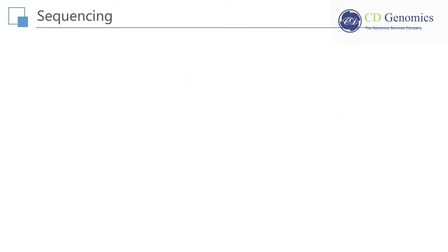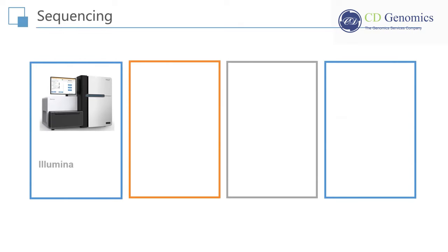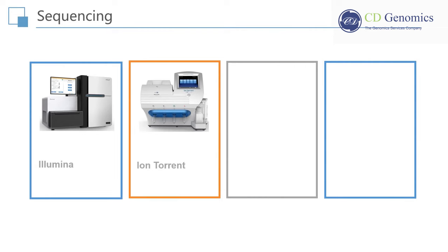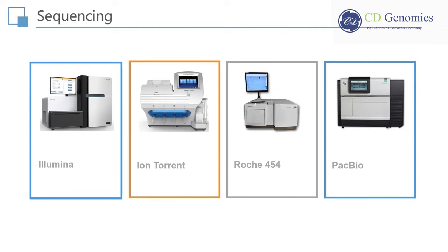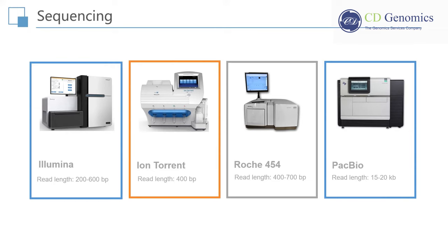RNA-Seq is currently dominated by three different platforms: Illumina, IonTorrent, Roche 454, and Pacific Biosciences SMART. Read lengths range from 200 to 600 bp for Illumina, 400 bp for IonTorrent, 400 to 700 bp for the 454 pyrosequencing system, and 15 to 20 kilobases for Pacific Biosciences SMART platforms. Longer reads or paired-end short reads can reveal connectivity between multiple exons. RNA-Seq is a powerful method to study complex transcriptomes and reveal sequence variations in the transcribed regions.